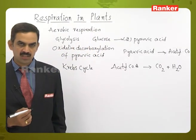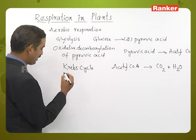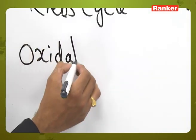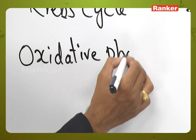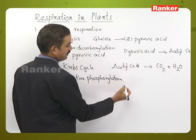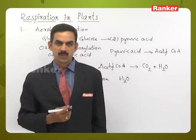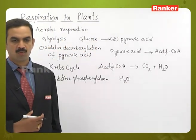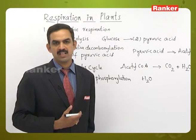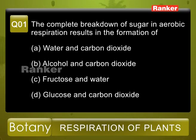In the Krebs cycle, those released compounds are carbon dioxide and water molecules. The complete oxidation of food materials results in carbon dioxide and water. One more step is oxidative phosphorylation, where water molecules are also formed. So the end products of aerobic respiration are water and carbon dioxide — the correct answer for question number one is option A.